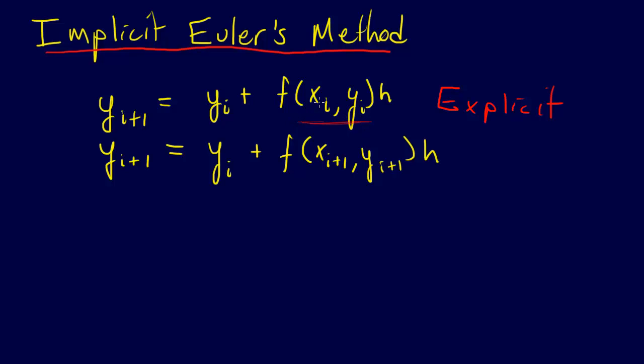And again, this estimate of the derivative or the slope was supposed to be a representative estimate over the interval. And so it wasn't necessarily the slope at yi or yi plus 1, but a representative slope over the interval.